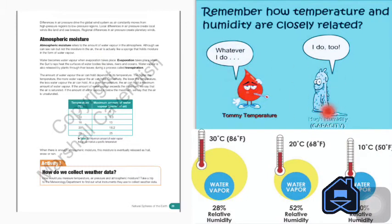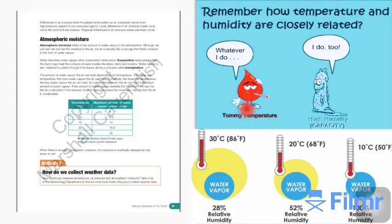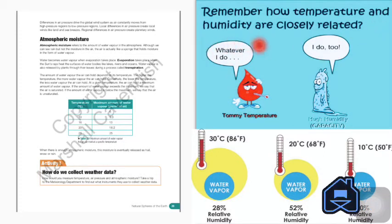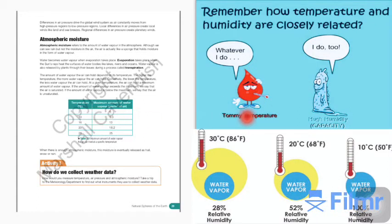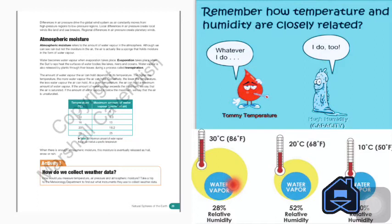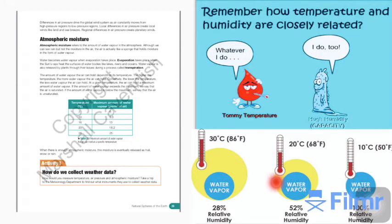Now let us see, suppose this is humidity and this is temperature. Remember how temperature and humidity are closely related. As you increase the temperature, the amount of humidity also increases. As you decrease the temperature, the amount of humidity also decreases.